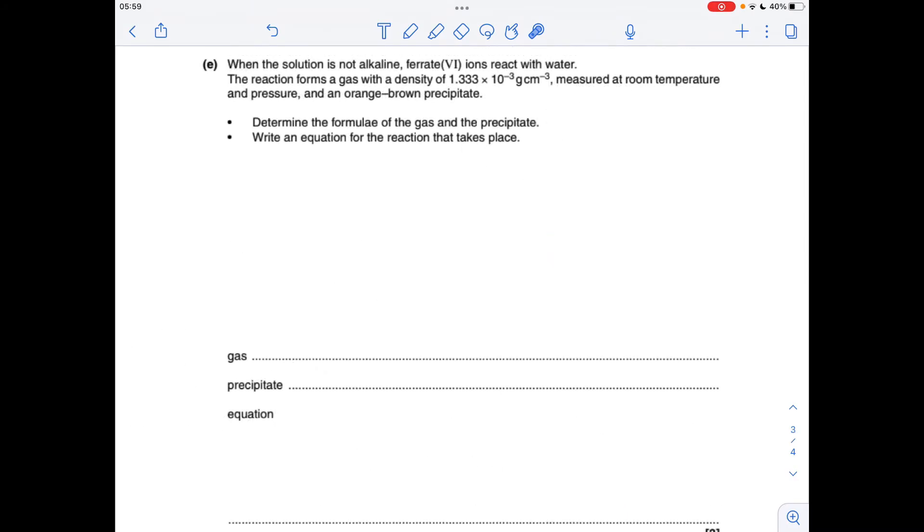Moving on to the final part of the question. We're told when the solution isn't alkaline, these ions react with water. The reaction forms a gas with this density. In other words, 1 cm³ at RTP has a mass of that. And also, there's an orange-brown precipitate. The first thing I'm going to do is work out the formula of the gas and the precipitate. I'll deal with the precipitate first. We've got iron, it's orange-brown. Iron(III) hydroxide.